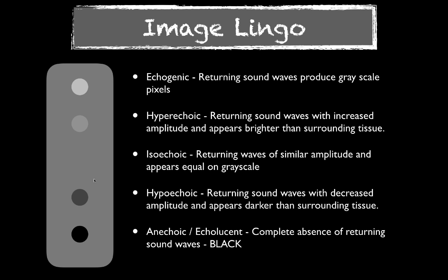In the middle we have isoechoic. You'll hear people say something is isoechoic to the liver or isoechoic to the surrounding structures — that just means it has the same echogenicity. For example, there's a circle in the image but you can't see it because it's the same echogenicity as the rectangular box, so that would be isoechoic. We also use the terms hyperechoic and hypoechoic. If a structure is brighter than the surrounding structure, it's hyperechoic. If it's not quite as bright but not black, it's hypoechoic rather than anechoic.